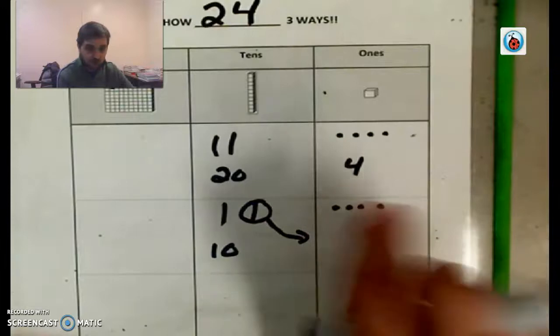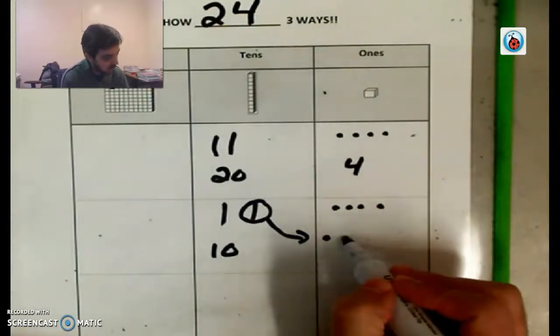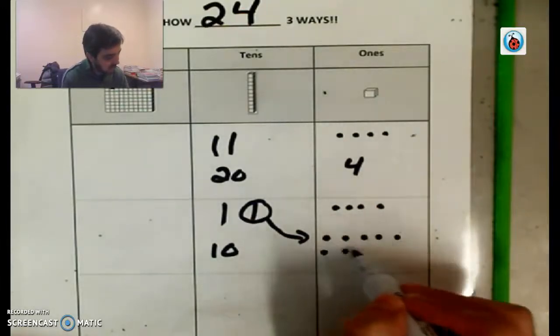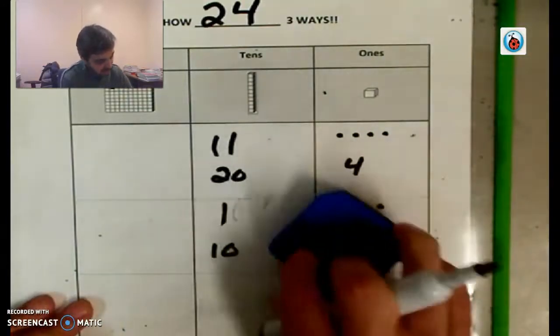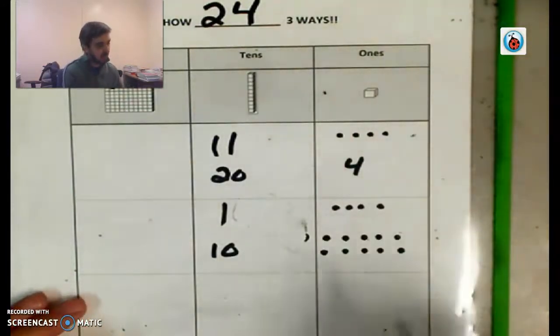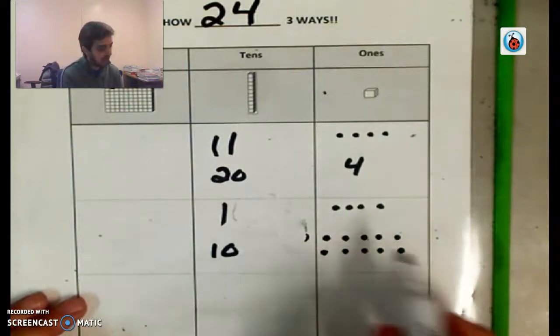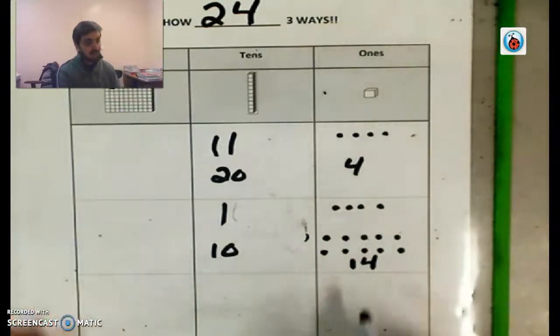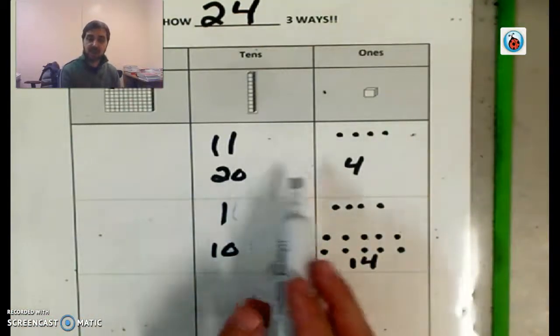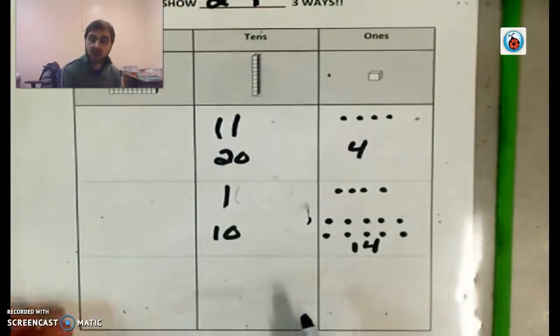And if we pour them out, we pour out 1, 2, 3, 4, 5, 6, 7, 8, 9, 10. So we no longer have this one. That bag is gone. The M&M's are out of the bag. So now we have 10 and, let's see, 10, 11, 12, 13, 14. So 24 could be two 10s and four 1s, or it could be one 10 or 10 and 14 1s, right? Is there a third way?